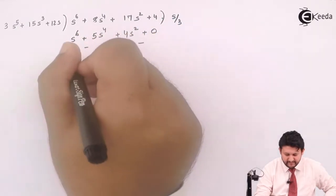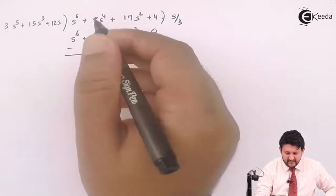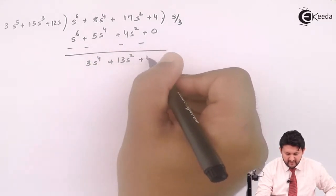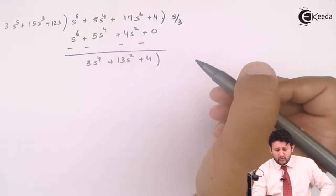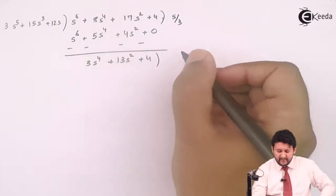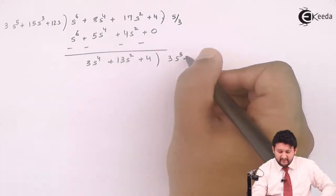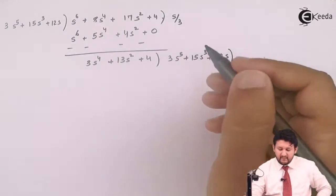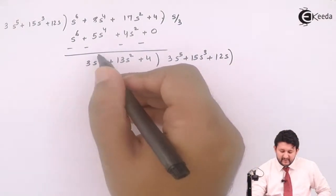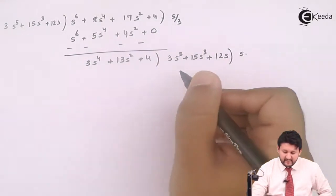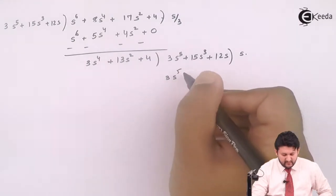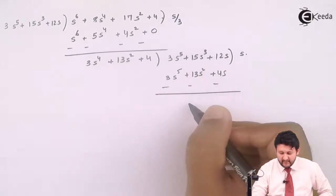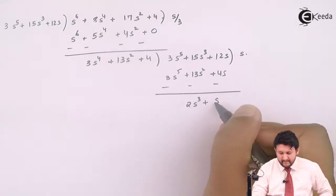Change the sign. Simplify and cancel. The value which you get after simplifying is 13s² + 4. Since it is a continual division, you shift this side — the term becomes 3s⁵, then 15s⁵, then 12s. Again, the same logic: highest term divided by highest term. Multiplying gives 3s⁵ + 13s² + 4s. Change the sign, and the value obtained is 2s² + 8s.